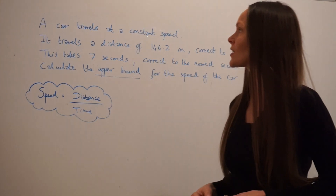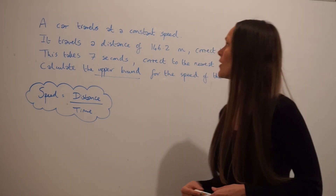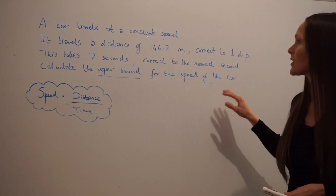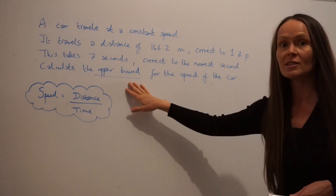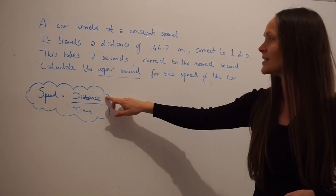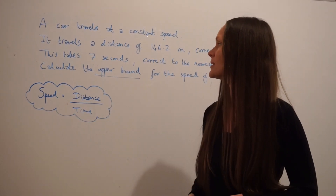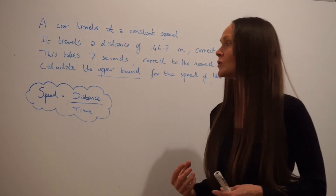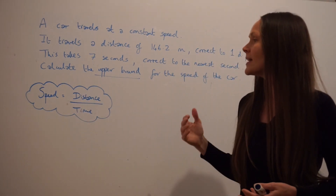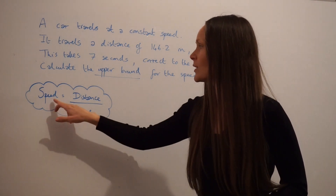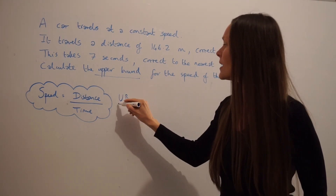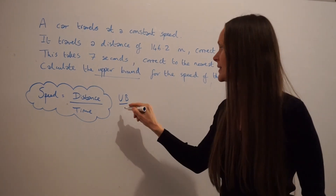In this question, it says a car travels at a constant speed. It travels a distance of 146.2 meters correct to one decimal place, and this takes 7 seconds correct to the nearest second. Calculate the upper bound for the speed of the car. I've written down the formula to calculate speed — you have to divide the distance by the time. So if we're working out the upper bound for the speed, we want to work out the largest possible value, the greatest speed that the car can have. We need to take the largest possible value for the distance, i.e. the upper bound, but the smallest possible time, i.e. the lower bound for time.